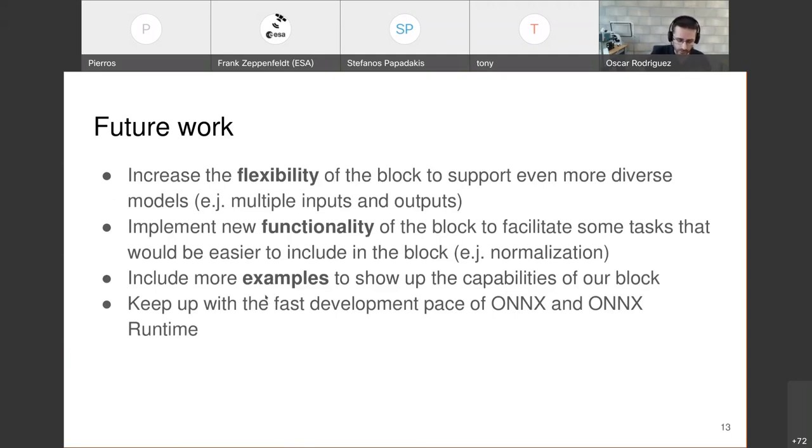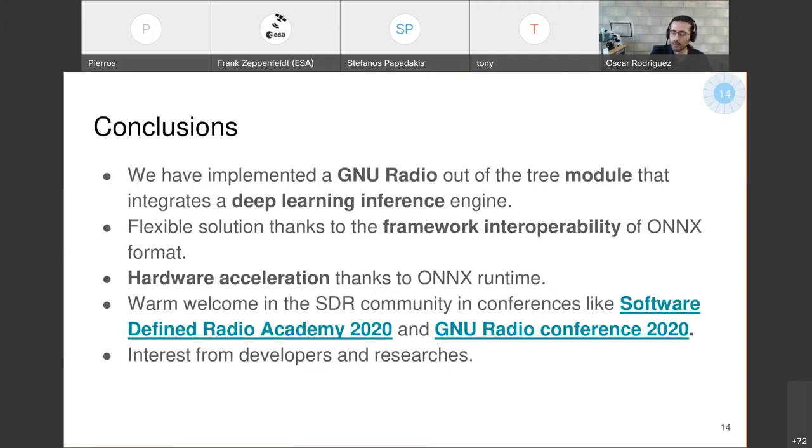get quite complex and maybe we can provide some common ways of normalization. We could include more examples because nowadays we have very simplistic examples. And because ONNX and ONNX runtime, they have become quite popular and they are putting resources behind them and they are keeping a very fast pace of development. I don't know which version they're on now, but I think they update it every two months or three months. So we have implemented a GNU Radio out-of-tree module for deep learning inference.